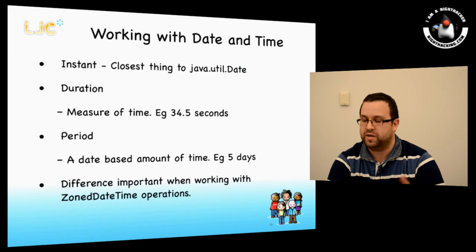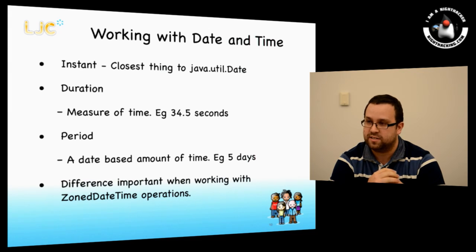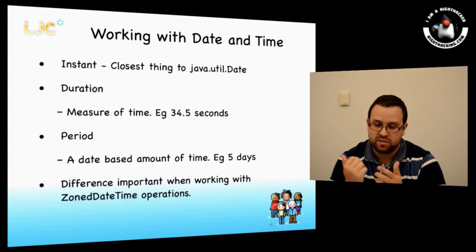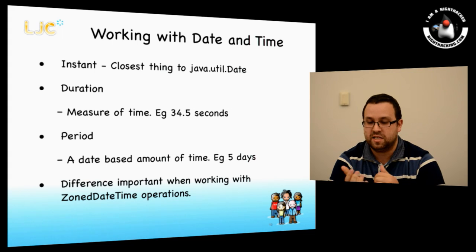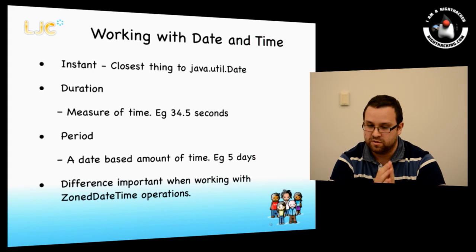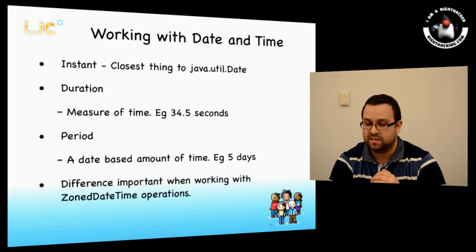Let's switch back to the slides, because now I want to talk about working with date and time. We've covered some basics on how to create date-times in the new java.time API. Now let's talk about Instant, Duration, and Period. An Instant is probably the closest thing to java.util.Date — when you do 'new Date' you get a millisecond value from the epoch of 1970, and an Instant is exactly the same: just a point in time on the timeline.